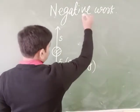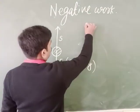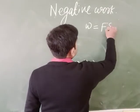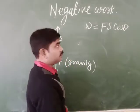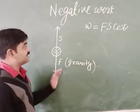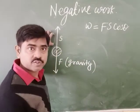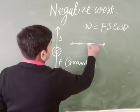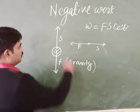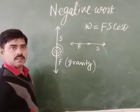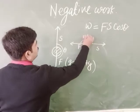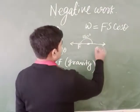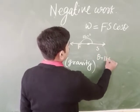Now, if we try to find out the expression for negative work using w = fs·cos θ, we need to find what theta is. Theta is the angle between the direction of displacement and the direction of force. Here, the direction of displacement and direction of force are exactly opposite to each other, so the angle formed is 180 degrees. Therefore, theta is equal to 180 degrees.